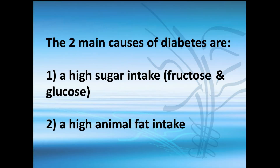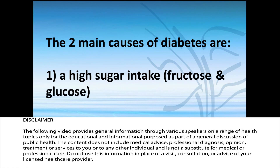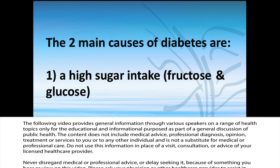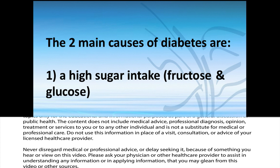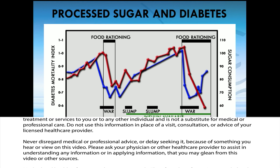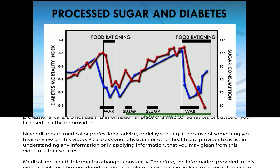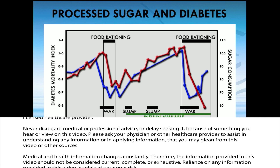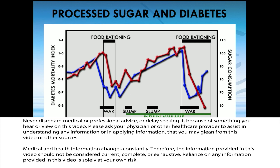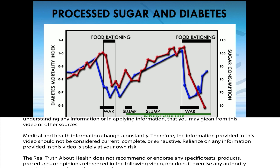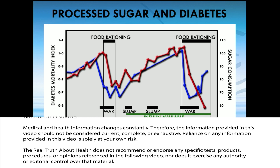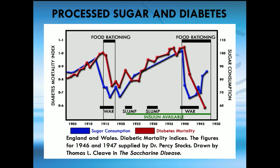Fructose and glucose are definitely associated with the onset of type 2 diabetes. High animal fat uptake — and secondarily, high animal protein — are also factors. This is work by Dr. Cleve: you can see where diabetes peaks before the wars, and then during World War One and World War Two, with less sugar available, rates of diabetes go down. His 1975 book called 'The Saccharine Disease' made this clear.